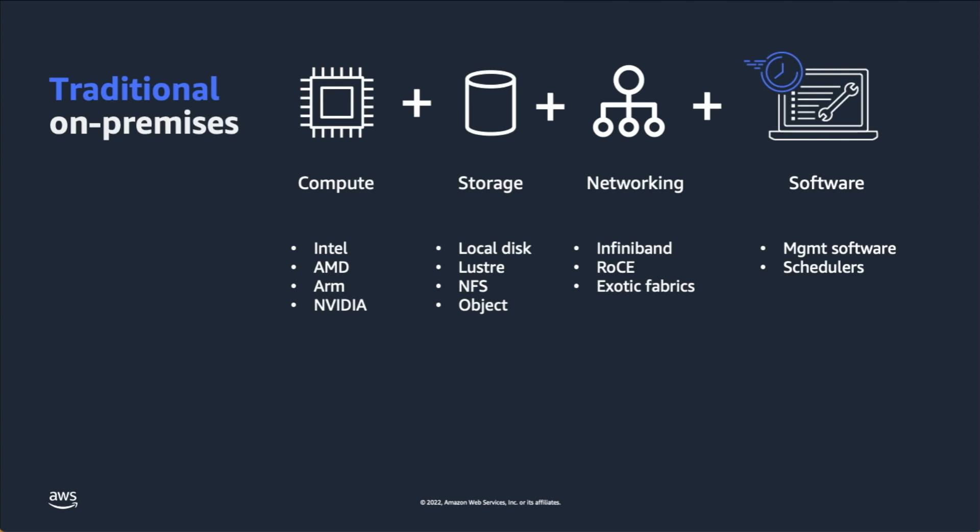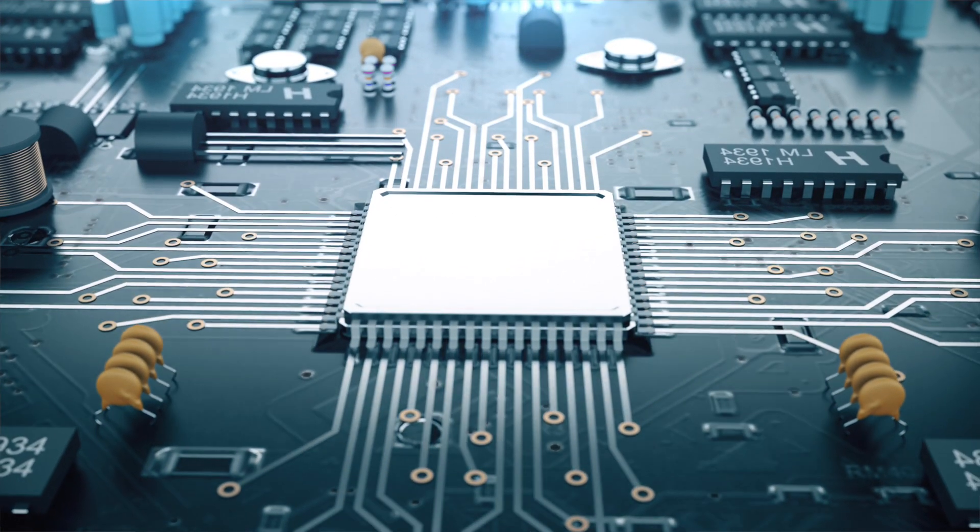If you think about your traditional on-prem cluster — compute, storage, and networking — when you buy your compute you had a choice of different CPU vendors. You might have put some GPUs in there. The ratio of CPU to GPU nodes varies depending on your application and use cases, and also depends on what kind of guess you're willing to make about future use cases, because that's a characteristic of buying physical capital: you have to estimate what you need in advance. There's a lot of other things that go into a compute node — local scratch storage, memory-to-core ratios, how many cores per socket, how many sockets, and a bunch of other factors.